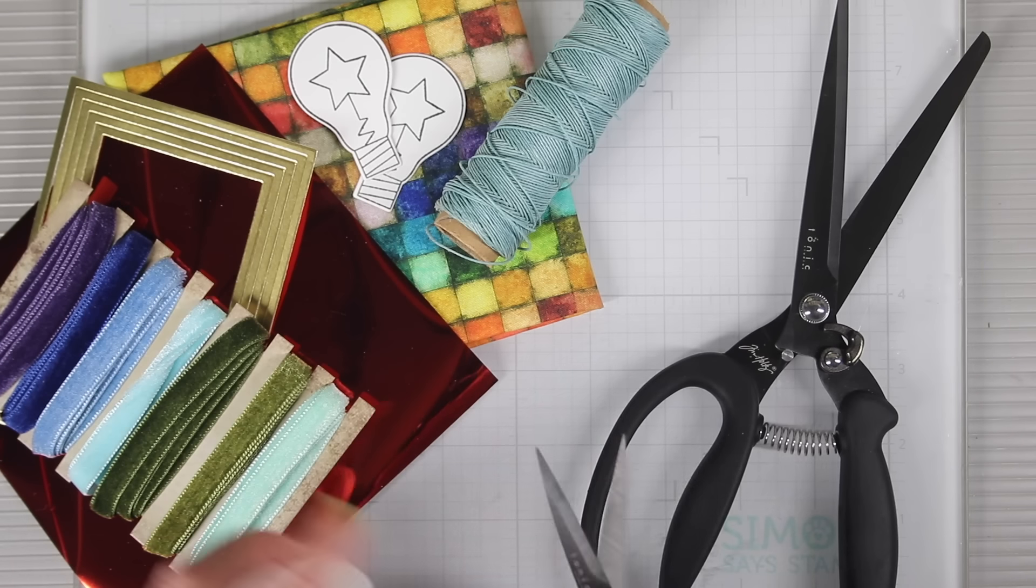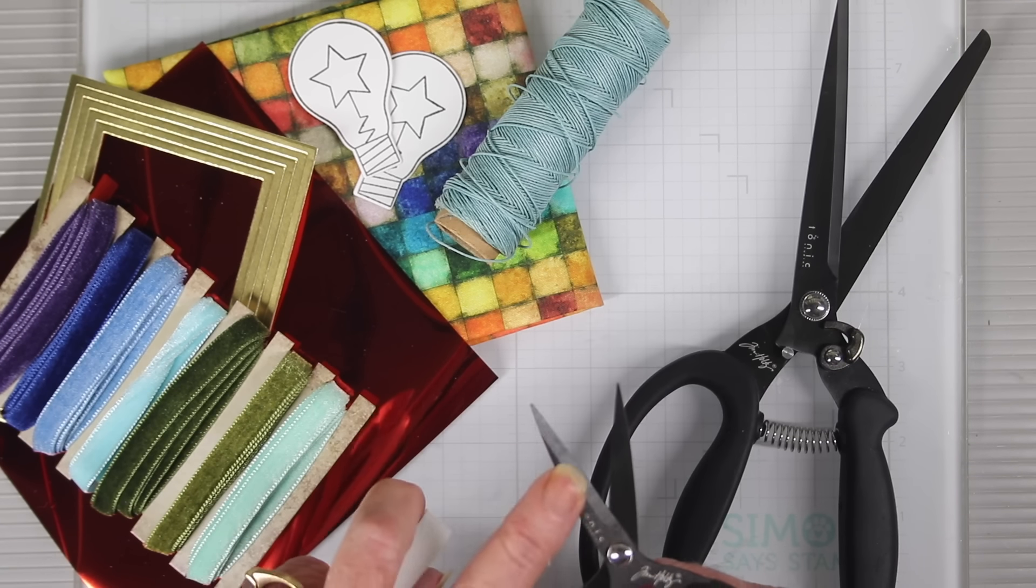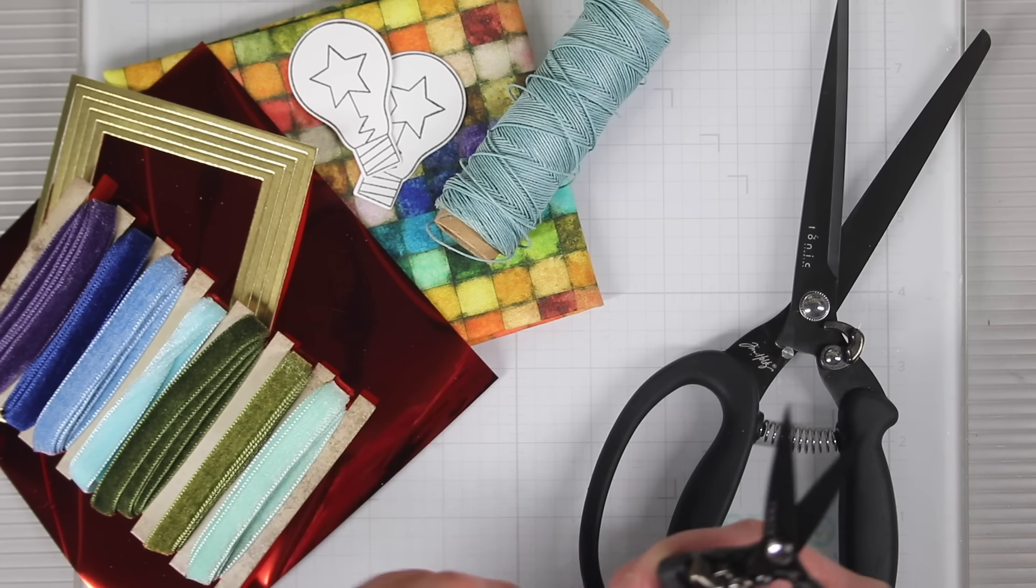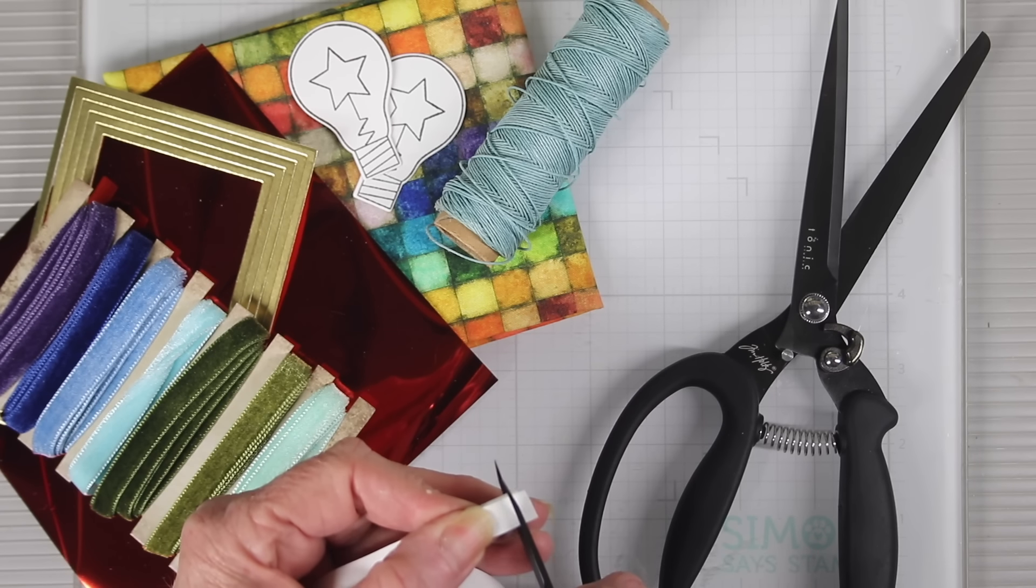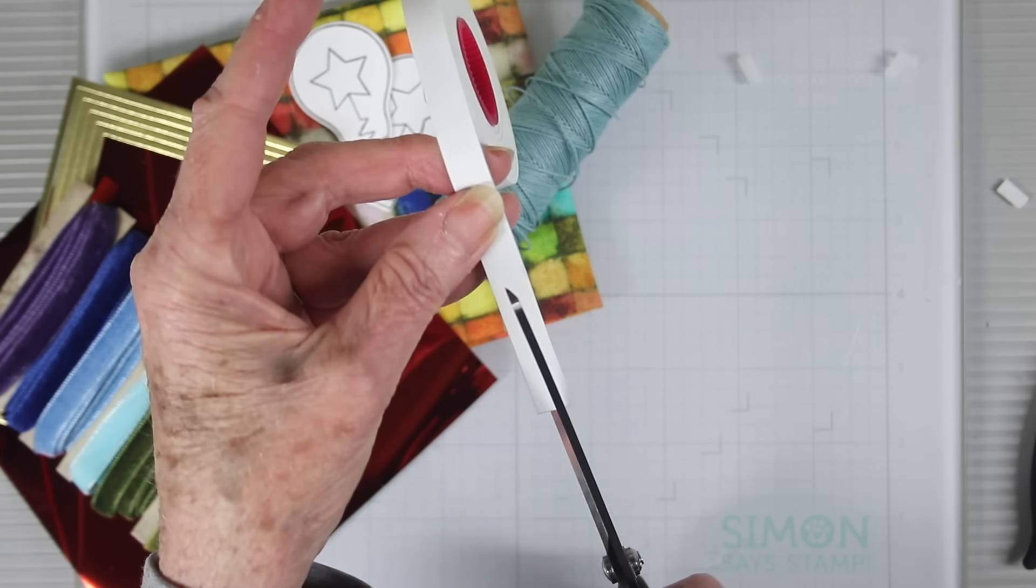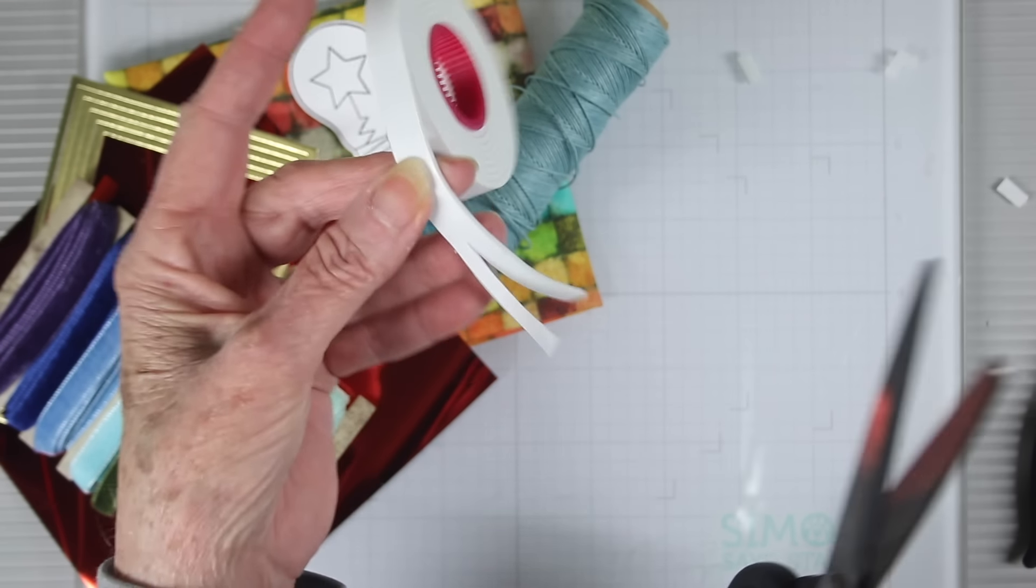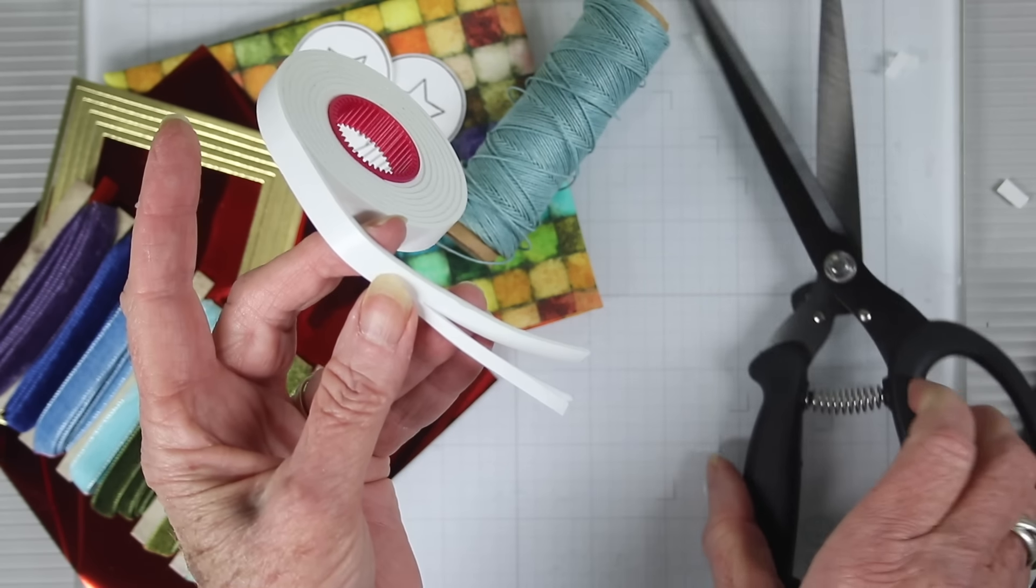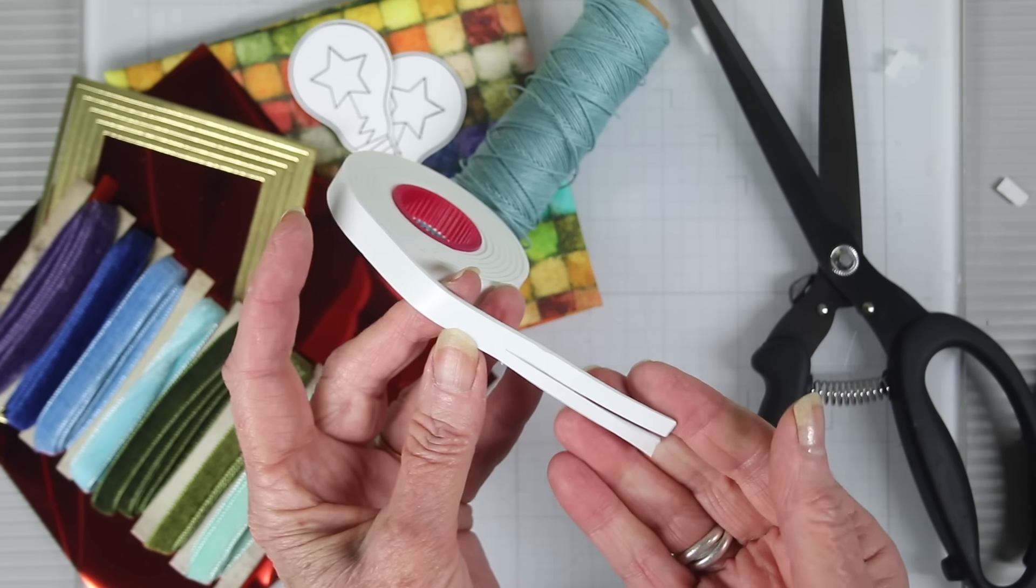The titanium blades are anti-rust and corrosion, and they make it super easy to cut through your adhesives. Watch how this just pops right off those scissors. The 9 1⁄2 inch blades makes it really easy to cut lengthwise through your adhesive. This is perfect for shaker cards and sentiment strips.